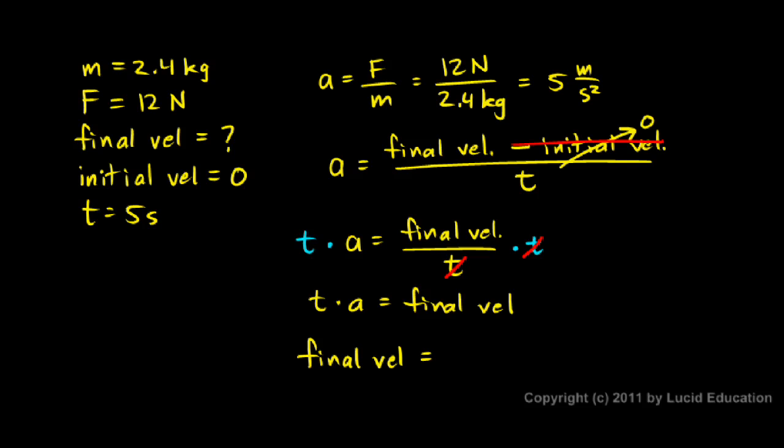The final velocity will be the time, that's 5 seconds, multiplied by the acceleration, which we found earlier. The acceleration was 5 meters per second squared. Now, watch this. 5 times 5, you obviously know, is 25. But watch the units. This is instructive.